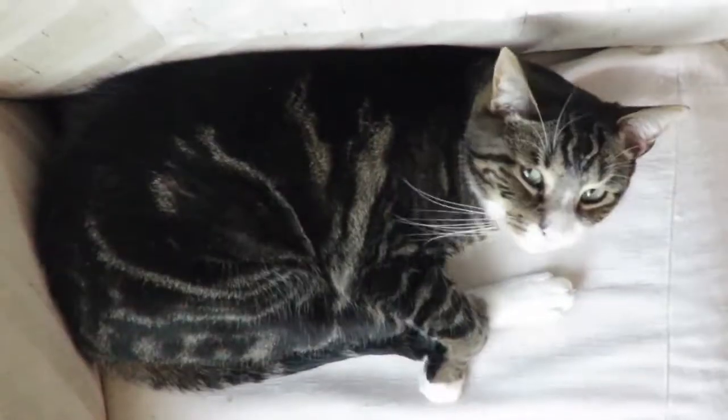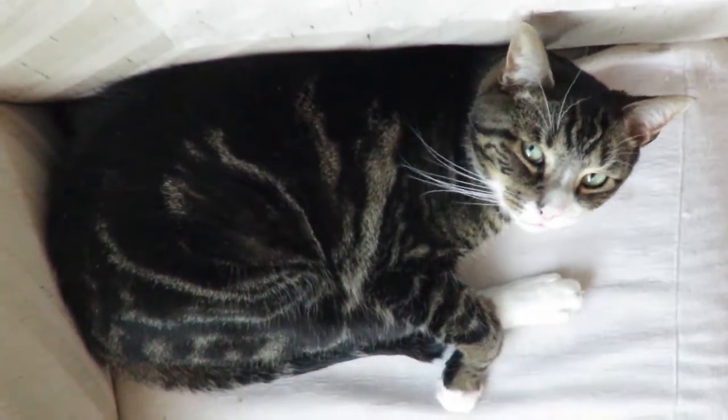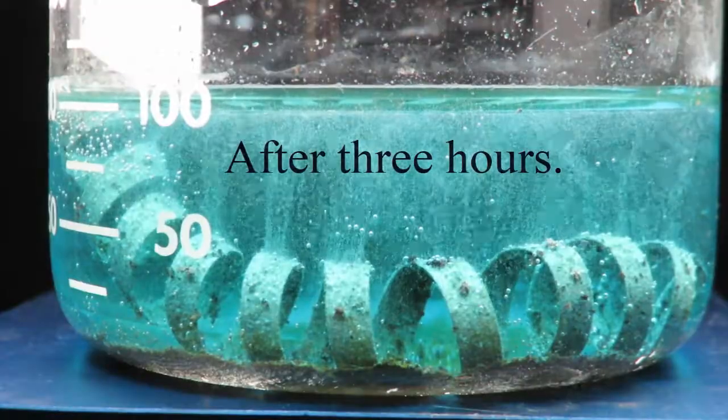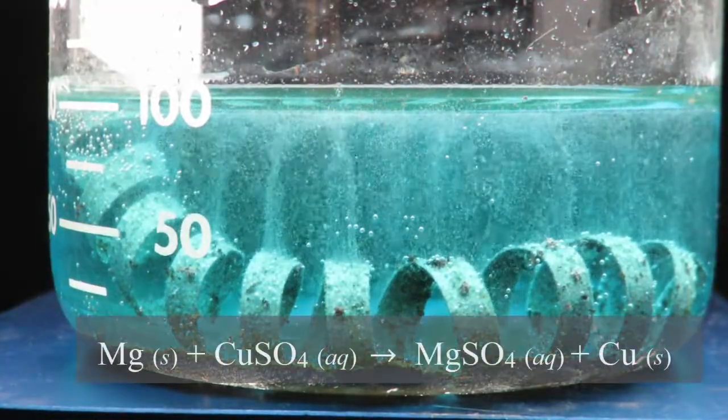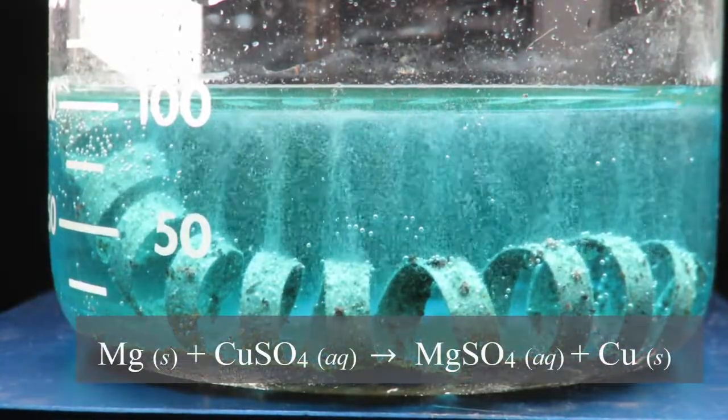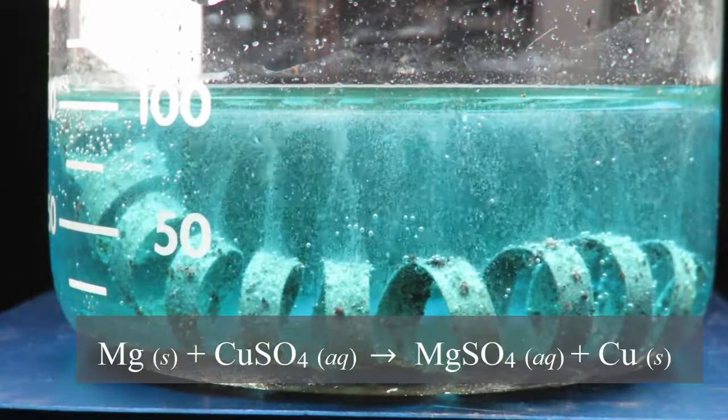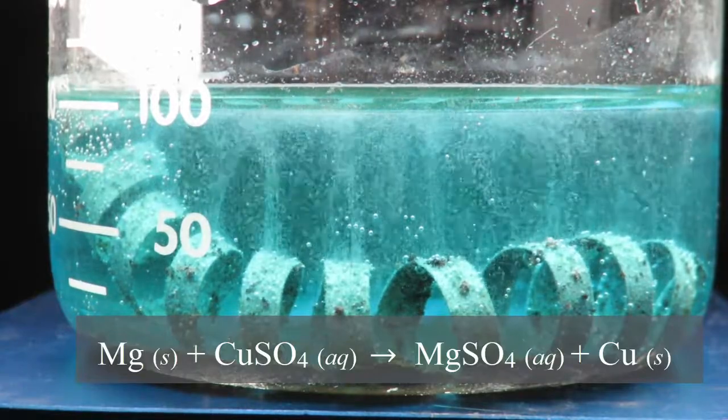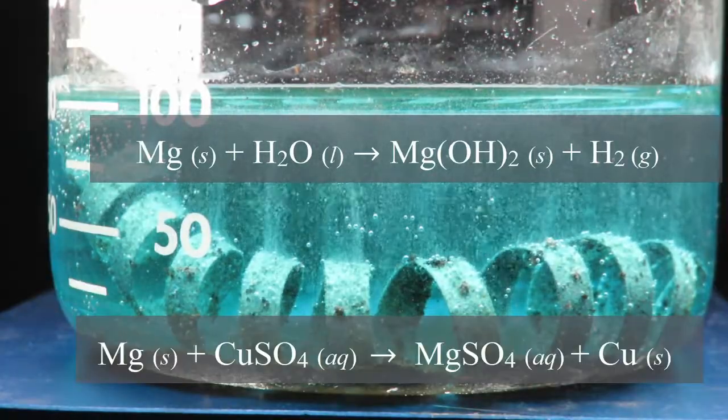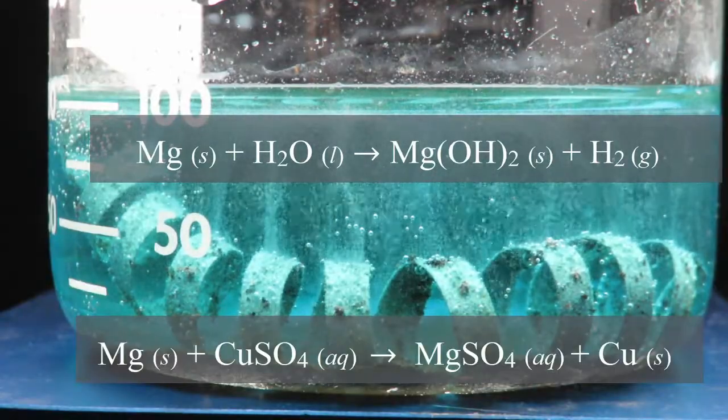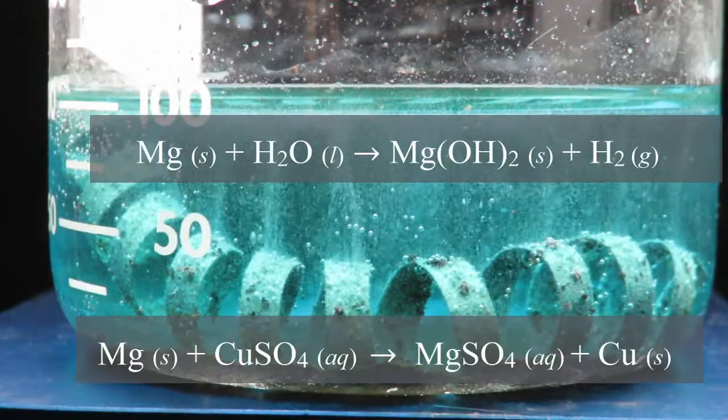But wait, what are those bubbles? There aren't any bubbles in our equation. That's unpossible. We actually have two reactions taking place here. First, we have our single replacement reaction, the magnesium reacting with the copper sulfate. But the magnesium will also react with water. That gives us magnesium hydroxide and H2. H2, that's a gas. So those are the bubbles.